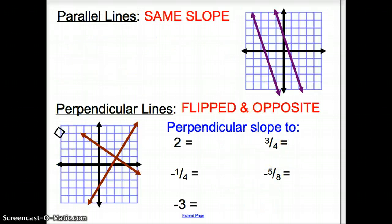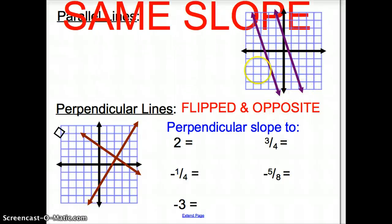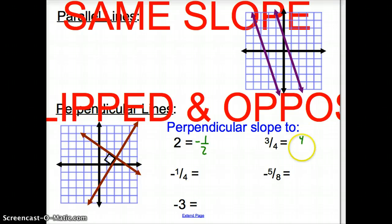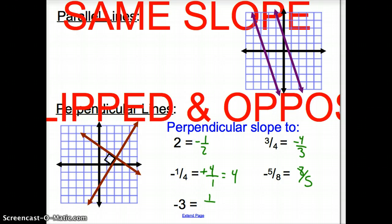Now we have parallel and perpendicular lines. Parallel lines have the same slope — they are like railroad tracks. Perpendicular lines have flipped and opposite slopes and form a 90-degree angle. For example: the perpendicular slope to 2 is negative 1/2; to 3/4 is negative 4/3; to negative 1/4 is positive 4; to negative 5/8 is positive 8/5; and to negative 3 is positive 1/3.